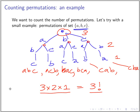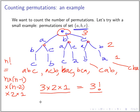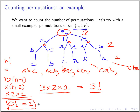In general, n factorial is the product n × (n−1) × (n−2) × … × 2 × 1. By convention, zero factorial is defined to be one, so that everything works out. It looks strange, but we take it as given.